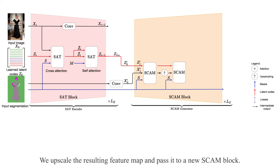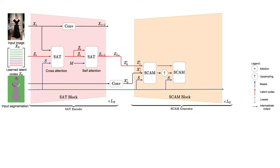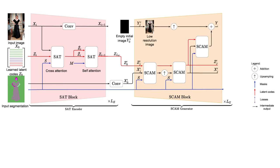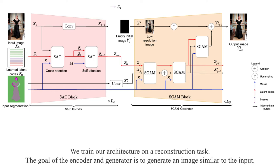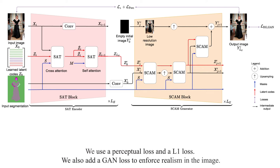We upscale the resulting feature map and pass it to the next SCAM block. To generate the image, we use an auxiliary branch that works in LGB space. We train the architecture on a reconstruction task. The goal of the encoder and generator is to generate an image similar to the input. We use a perceptual loss and an L1 loss, and also add a GAN loss to enforce realism in the image.